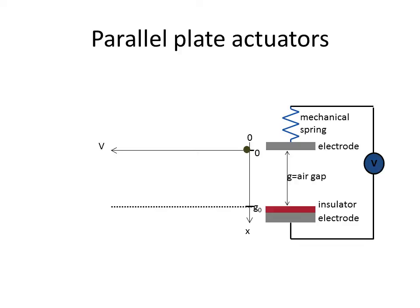There's also an air gap g here and if we put a voltage at the moment the voltage v equals zero, then you can see there will be an equilibrium situation where the mechanical spring is at rest and you have a starting air gap g.